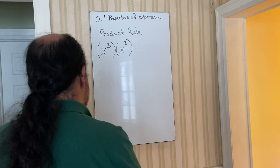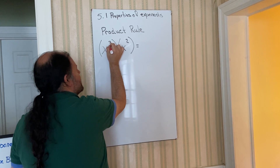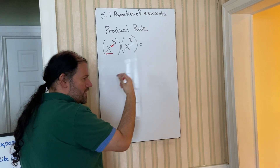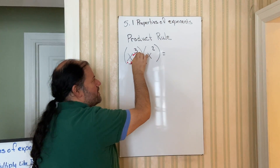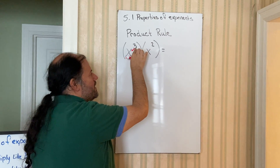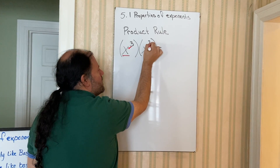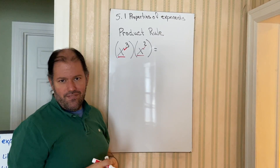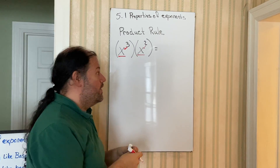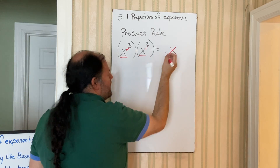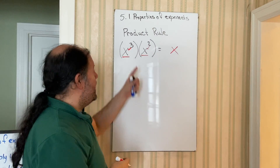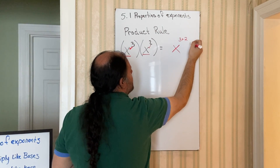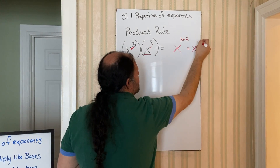Remember, to find what the base is, take the exponent and see what's the first thing it touches. Notice it touches the x, so the base here is x. Remember, it's what's directly in front of it, not what's behind it. So this 3 doesn't apply to the parentheses — it applies to the x. This 2 applies to the x. So notice the bases are the same. When the bases are the same, we keep the same base x, but add the exponents: 3 plus 2 gives us x to the fifth.